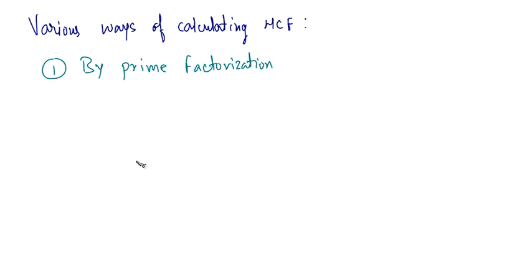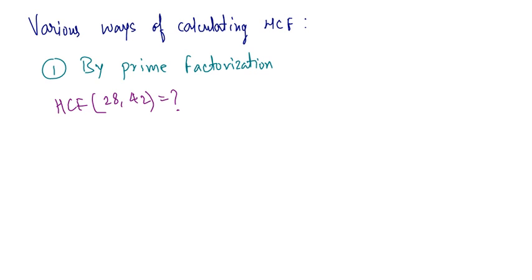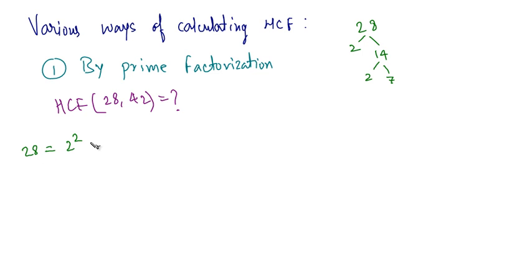There are various ways of calculating the HCF. One of these methods is by prime factorization. Let's do this method with the help of an example — we have to calculate the HCF of 28 and 42. The first step is to calculate the prime factors of the given numbers. For 28: divide by 2 to get 14, divide by 2 again to get 7. So the prime factors of 28 are 2 squared into 7.